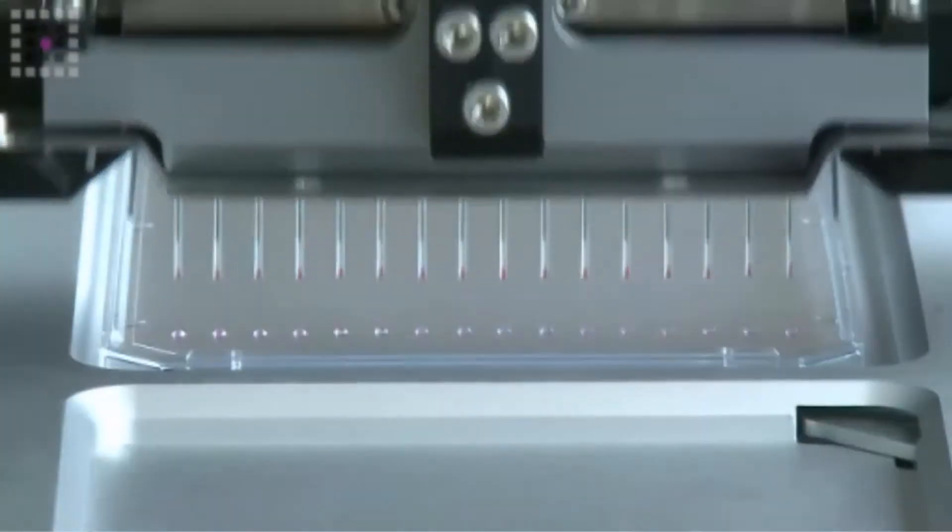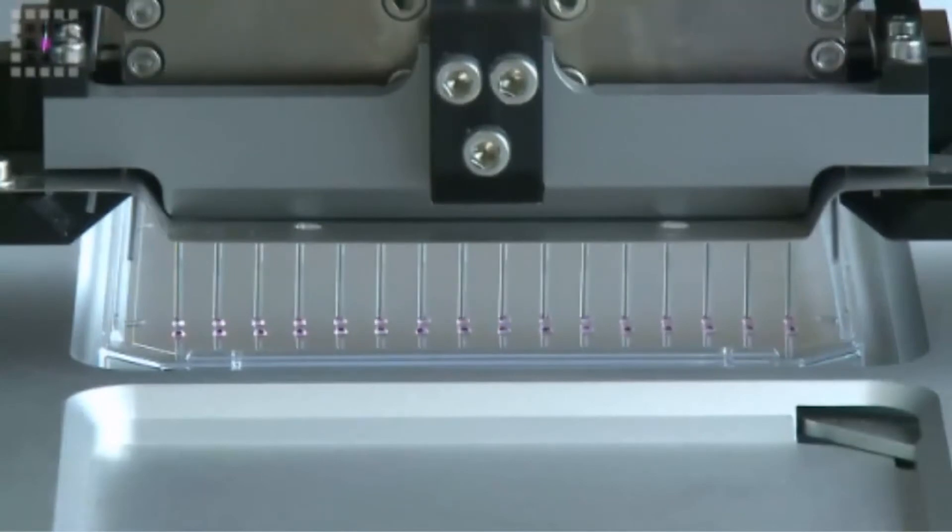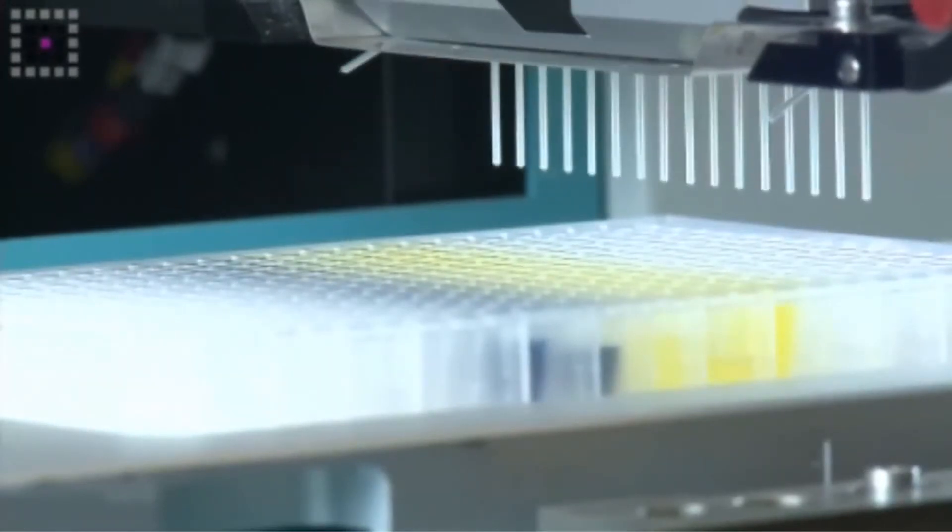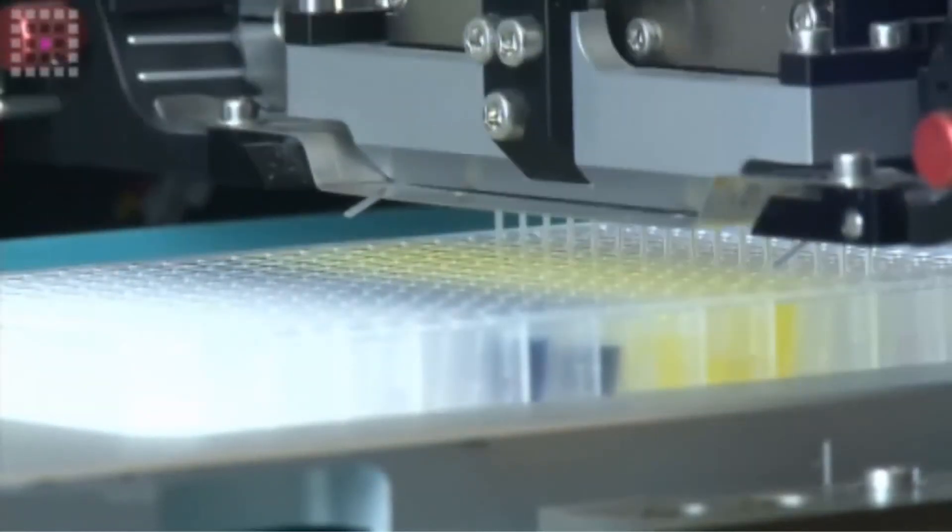In this case we can go down to 10 nanolitres of the second liquid, which is the pink sample. The reason for this is that the second sample is pipetted in conjunction with the first sample that is already in the tip.